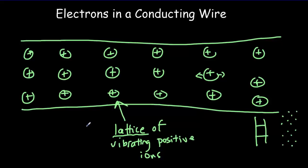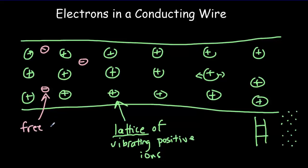Now why are all these ions positively charged? It's because the atoms have lost electrons. There are still lots of electrons in that ion, but some electrons aren't attached to any particular atom. We call those either free electrons or conduction electrons.